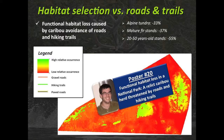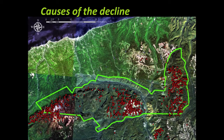For more details, go visit Poster 20 — William will answer all your questions. Other potential causes for the decline: here you have a Google Earth image of the caribou range in the Gaspésie region.